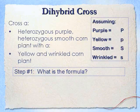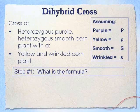Now we're going to walk through an example of a dihybrid cross. We're going to cross a heterozygous purple and heterozygous smooth corn plant with a yellow and wrinkled corn plant. Let's look at our symbols. We're going to use big P for purple, little p for yellow, big S for smooth, and little s for wrinkled. Now we're going to write out our formula.